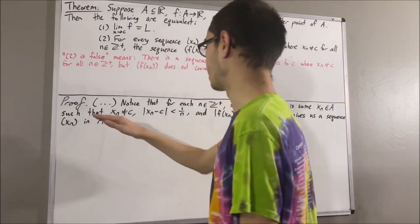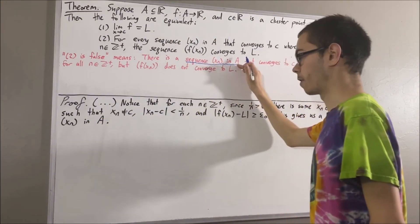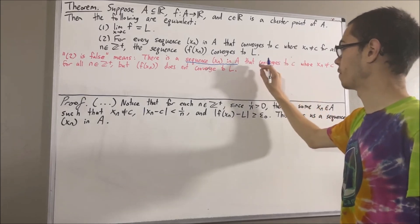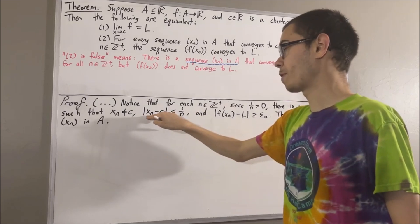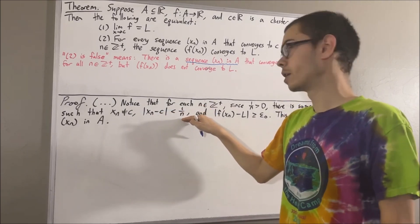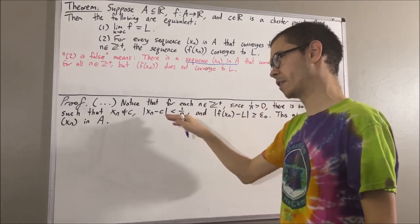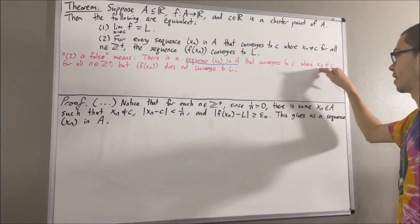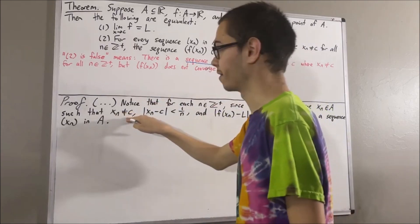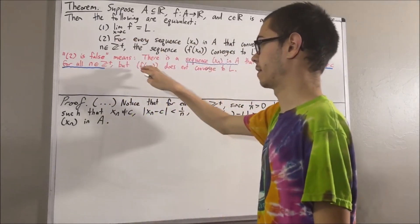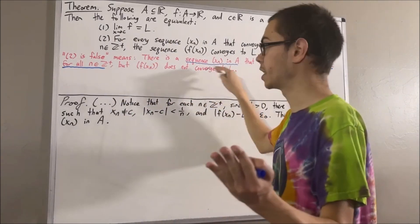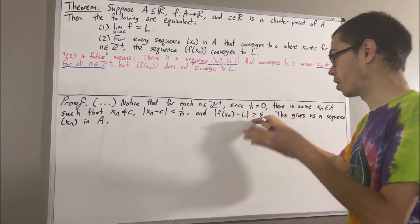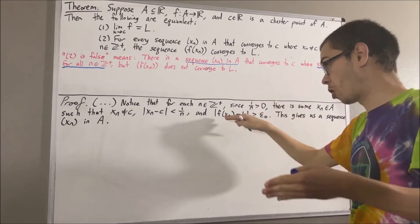We know that our sequence belongs to A — so that property is covered. We don't yet know whether our sequence converges to C. However, it's suggested by the fact that the absolute value of Xn minus C is less than one over N for all positive integers N — since one over N goes to zero, we should expect Xn to converge to C. We do know Xn is not equal to C for all positive integers N. We also don't yet know that F of Xn does not converge to L, but it's suggested because the absolute value of F of Xn minus L is greater than or equal to some fixed positive real number epsilon naught for all N.